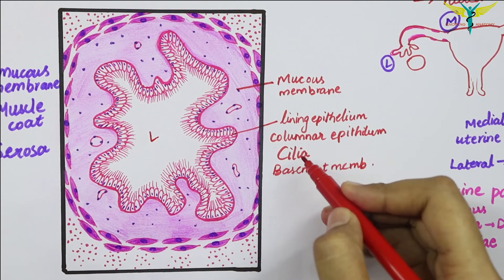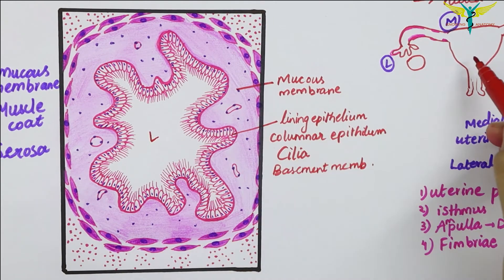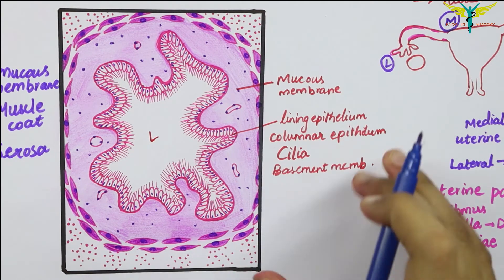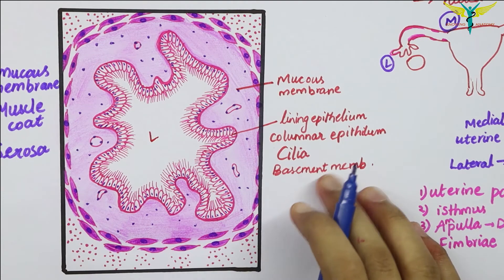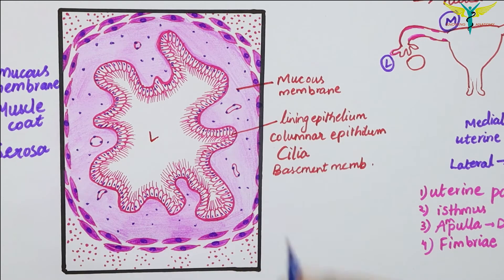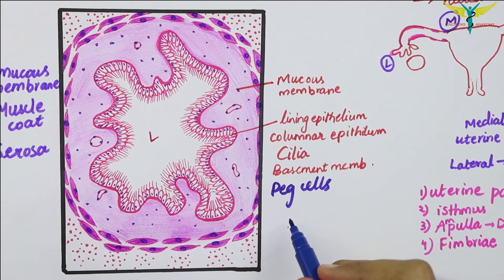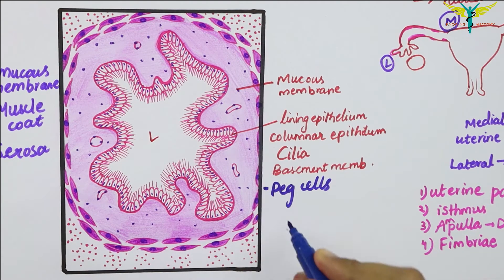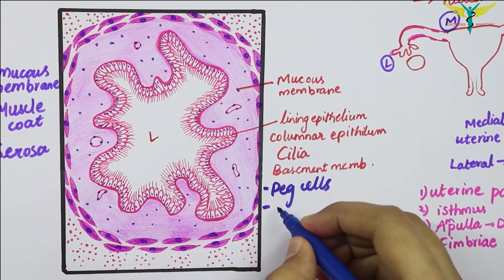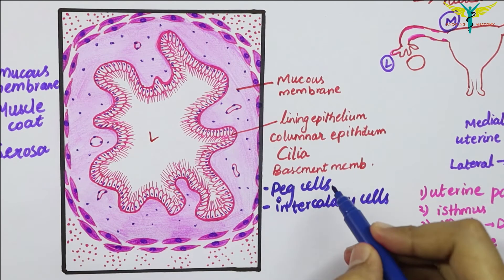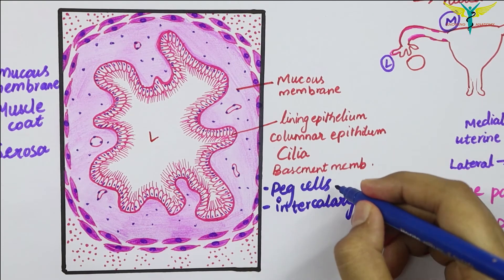The lining columnar epithelium contains cilia — you can see the ciliated columnar epithelium here — and it rests on the basement membrane. These cilia help in the movement of the ovum towards the uterus during fertilization or ovulation. Another important cell type present in the mucous membrane is the peg cell, which is secretory in nature, contains secretory granules, and is not ciliated.